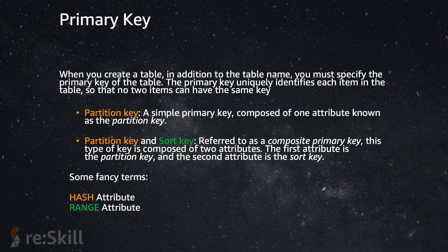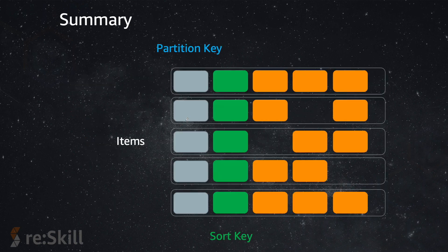There are some fancy terms you might see: 'hash attribute' refers to the partition key, and 'range' refers to the sort key. These are just internal terms. In an example table with five items, some have only a partition key while others have both a partition key and a sort key. For items with only a partition key, the uniqueness is just that partition key value, like Person ID.